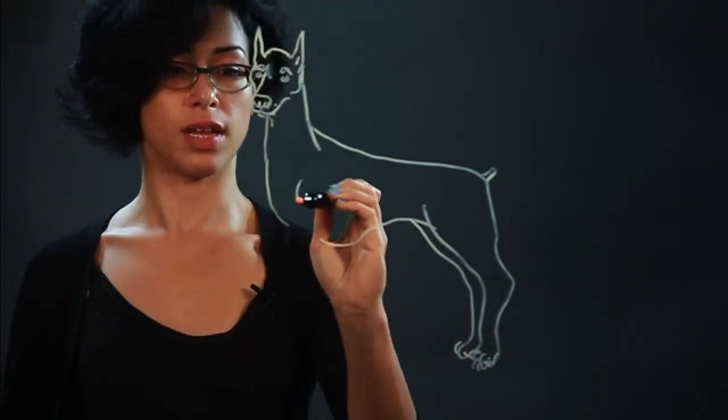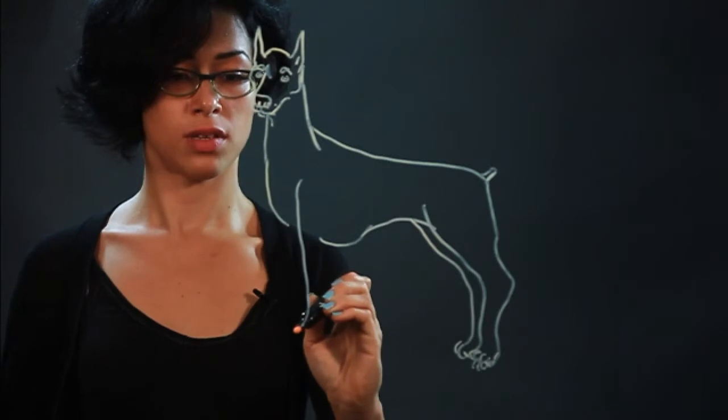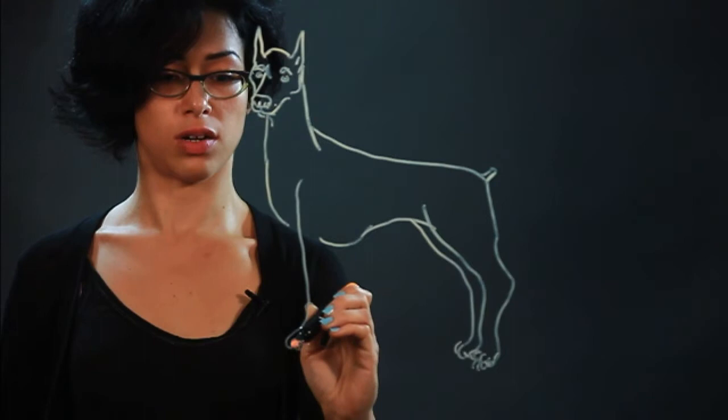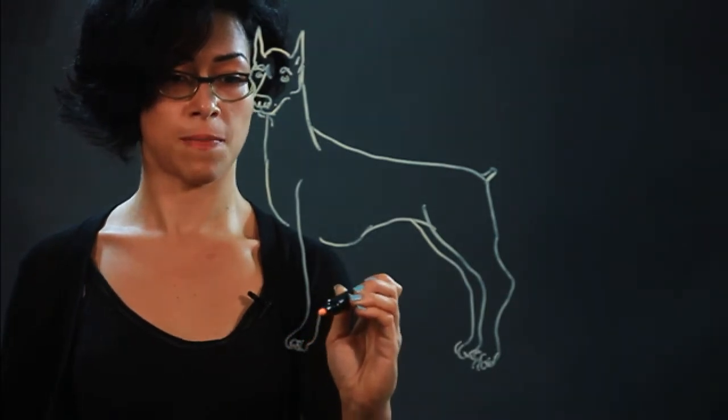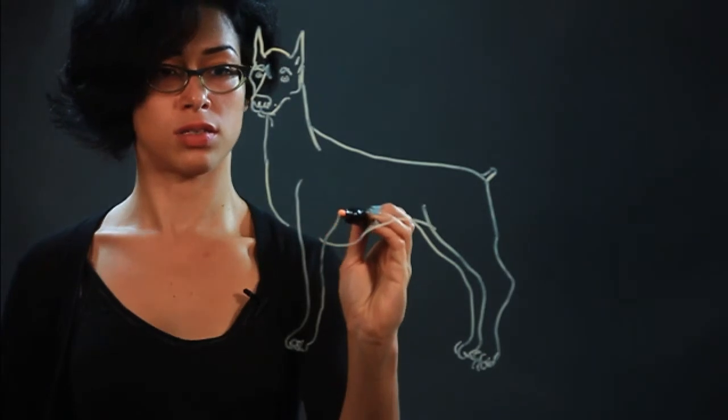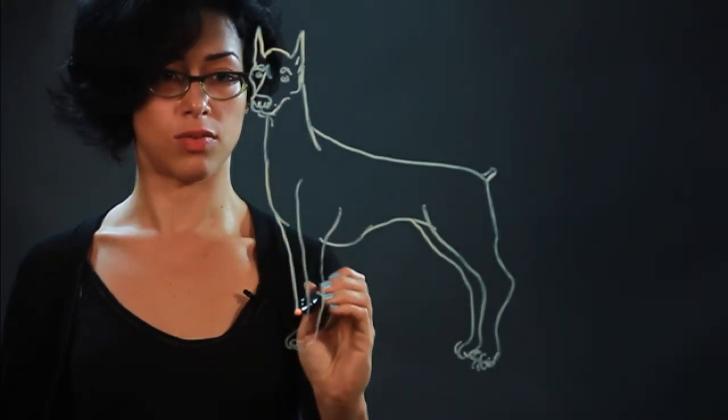And then the front leg is like so. And then the paws, once again, are little curved lines. And this curves in like that. Here's the other one.